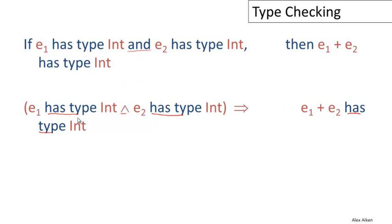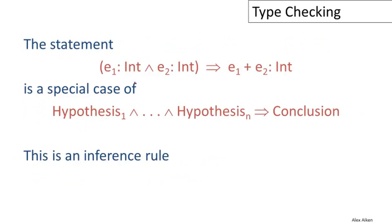We had a notation for the has-type statements, and we wind up with this purely mathematical statement: if E1 has type int and E2 has type int, that implies E1 plus E2 has type int. Notice that statement is a special case of an inference rule—a bunch of hypotheses conjoined together that implies some conclusion.